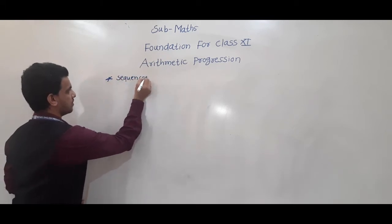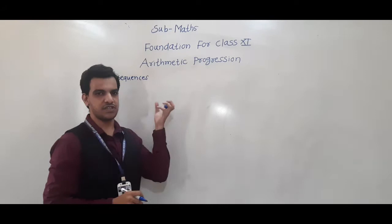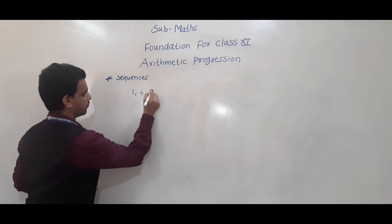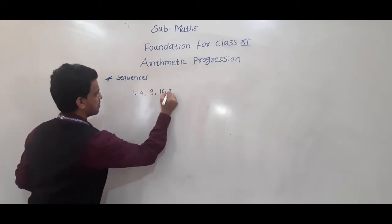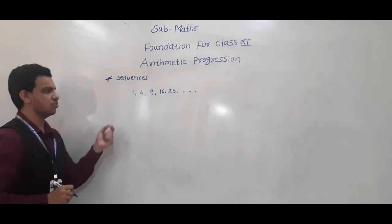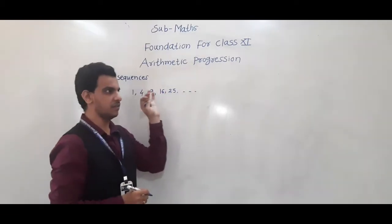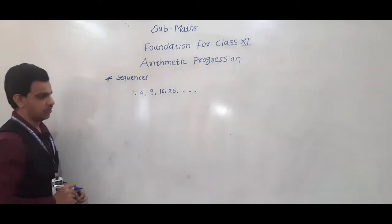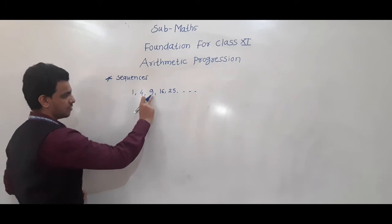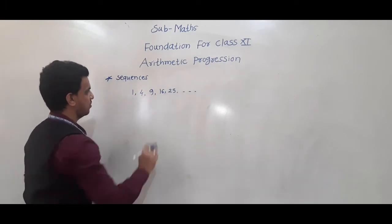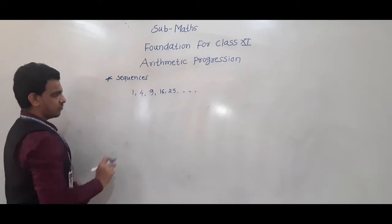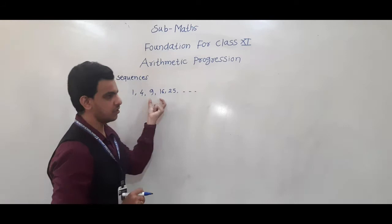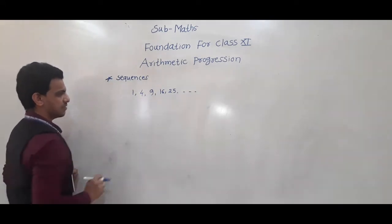Sequence is an arrangement of pattern of numbers. If I am writing numbers this way: 1, 4, 9, 16, 25 and so on. These are the numbers and here is some pattern. What is the pattern? These numbers are the perfect squares — 1 square, 2 square, 3 square and so on. The pattern is n square. So, these are called sequences.